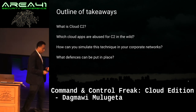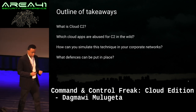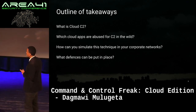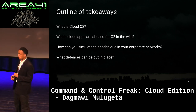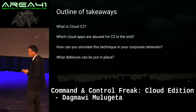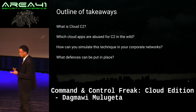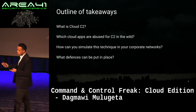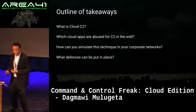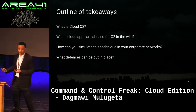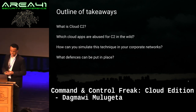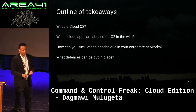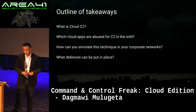It's my hope that everyone here today takes away four key points. Firstly, what is cloud C2 — what do we mean when we say cloud command and control? Secondly, what cloud apps are abused for C2 in the wild to date? Thirdly, if you wanted to simulate this technique in your own networks, how could you do that? And lastly, if you did identify a gap, what defenses can be put in place to identify this technique being used in your corporate networks?